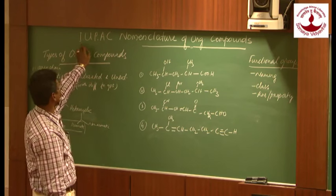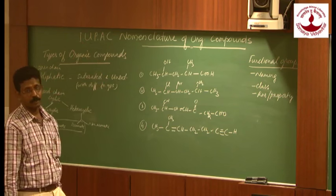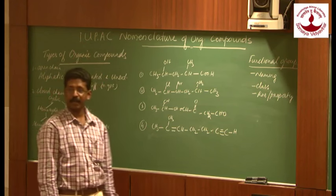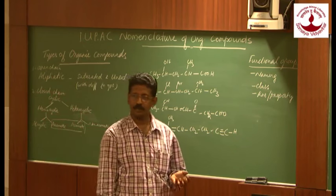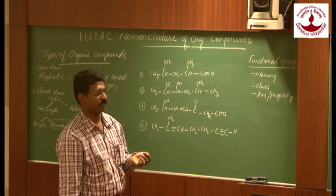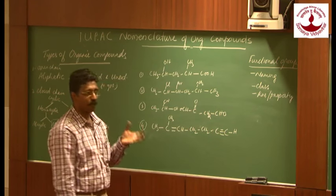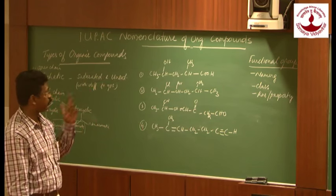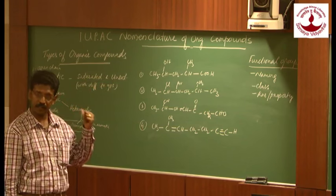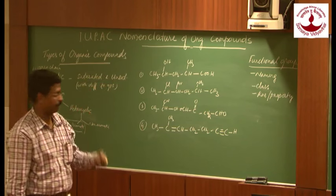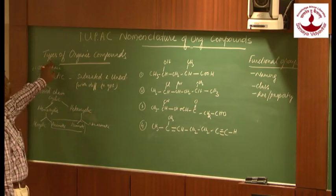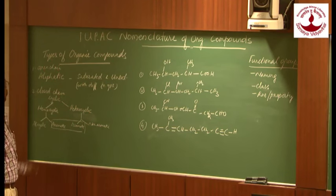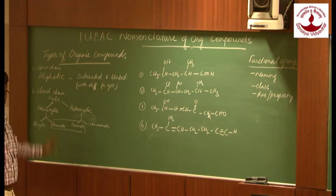IUPAC stands for International Union of Pure and Applied Chemistry — two important kinds of chemistry: pure chemistry and applied chemistry. Any compound to be named must follow the rules and regulations of IUPAC. Organic compounds are mainly classified into open chain compounds and closed chain compounds.